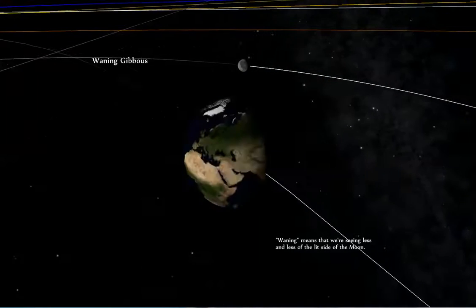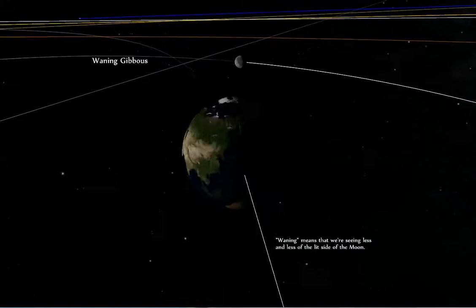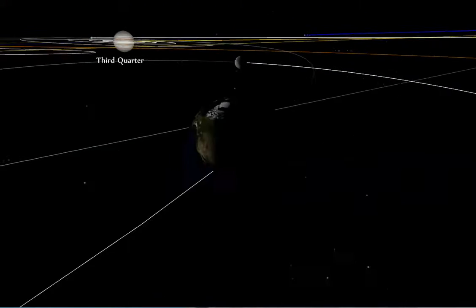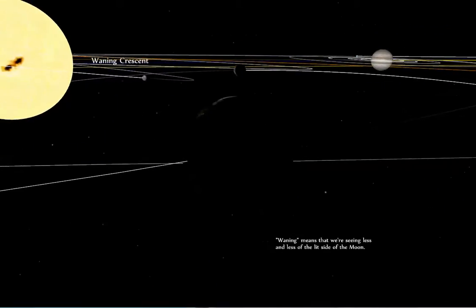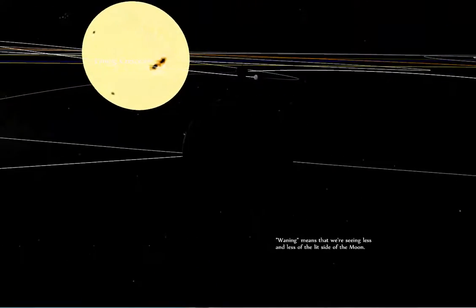Now we're at waning gibbous, and waning means that we're seeing less and less of the lit side of the moon. Third quarter. Waning crescent. And back to new moon.